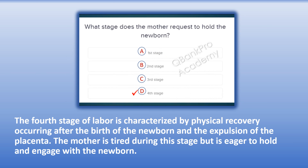The correct answer is D. Fourth stage. Explanation: The fourth stage of labor is characterized by physical recovery occurring after the birth of the newborn and expulsion of the placenta. The mother is tired during this stage but eager to hold and engage with the newborn.